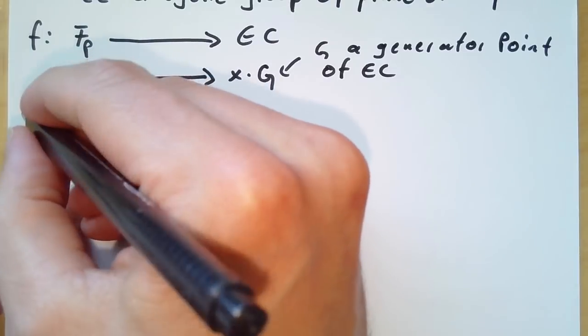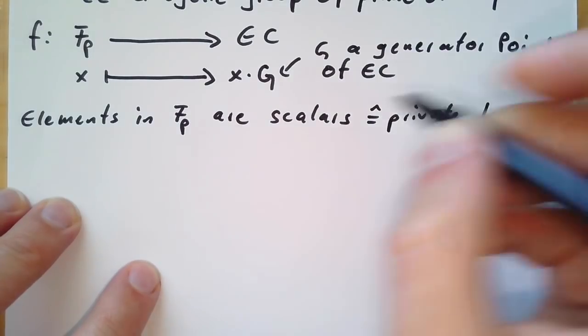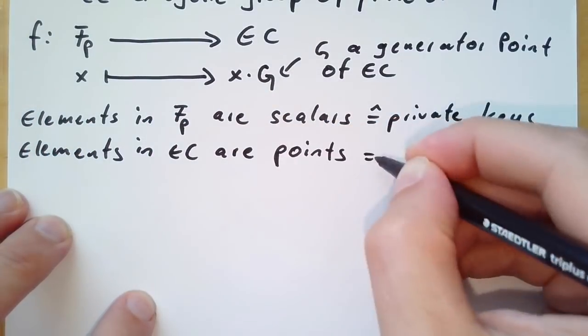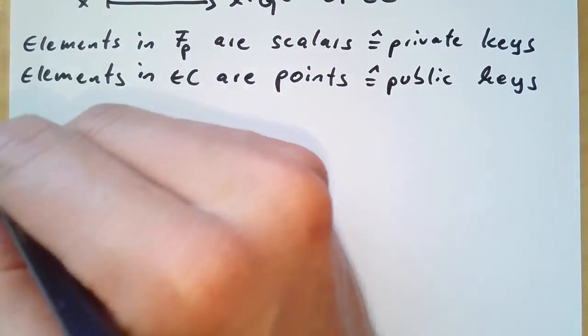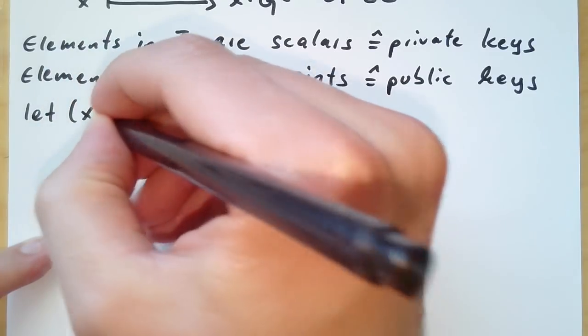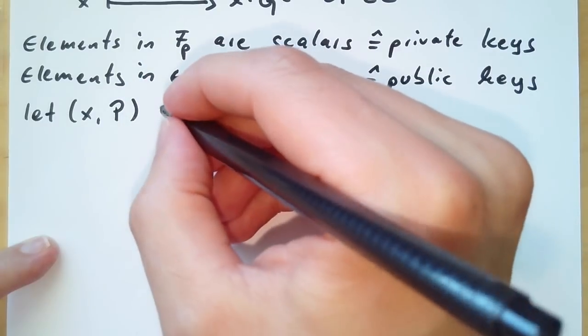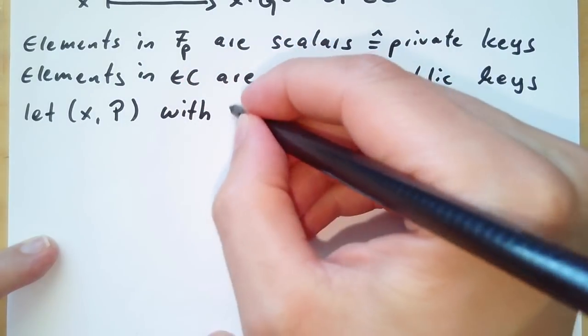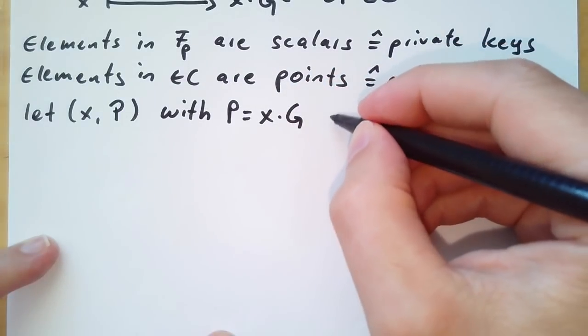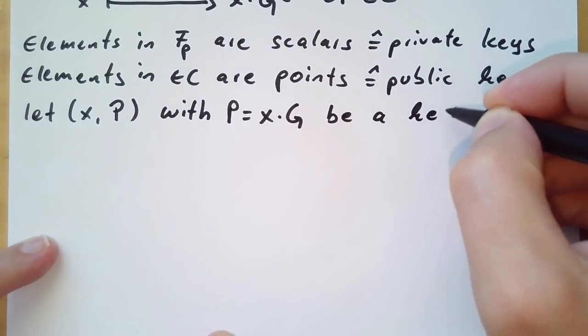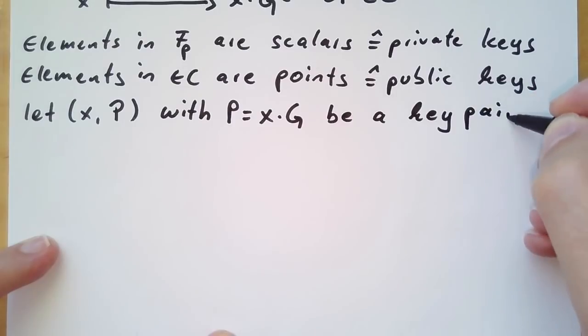Just a little bit of notation. The elements in the prime field are scalars, as I just mentioned, and we call them private keys. And the elements in the elliptic curve are points, or we call them public keys. You can think of them actually as Bitcoin addresses, though then they are hashed again. So let us select x as a private key and p as the corresponding public key. What this means is that we can get the public key, p, by multiplying our private key with the generator point, which is just according to the mapping that we defined. And this is what we call a key pair. And it's important to note that we can always get from the private key to the public key, but not the other way around.